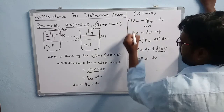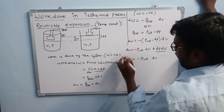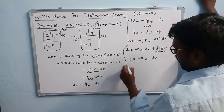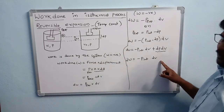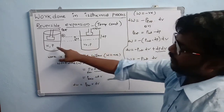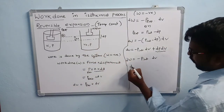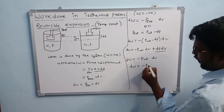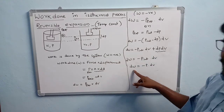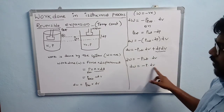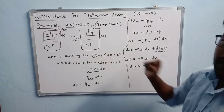For small changes, we write dW. So dW = −P_internal × dV. Here, internal pressure can be taken as P, so in place of P_internal, we write P. Therefore, dW = −P × dV. The negative sign is because work is done by the system.